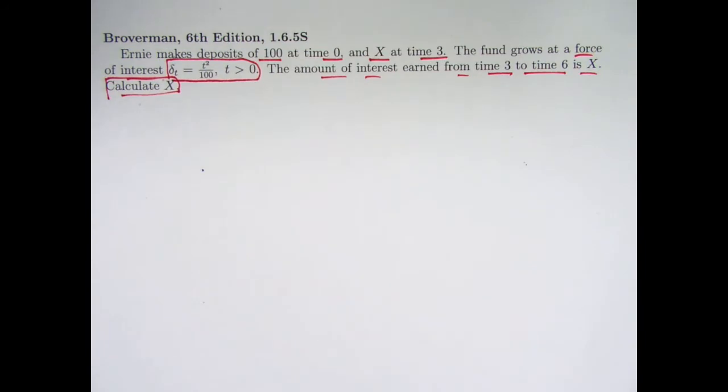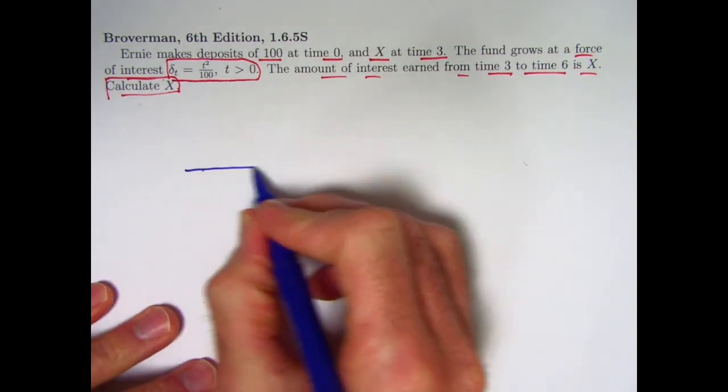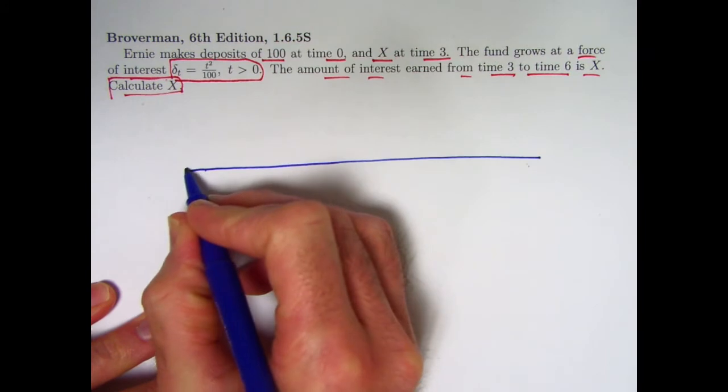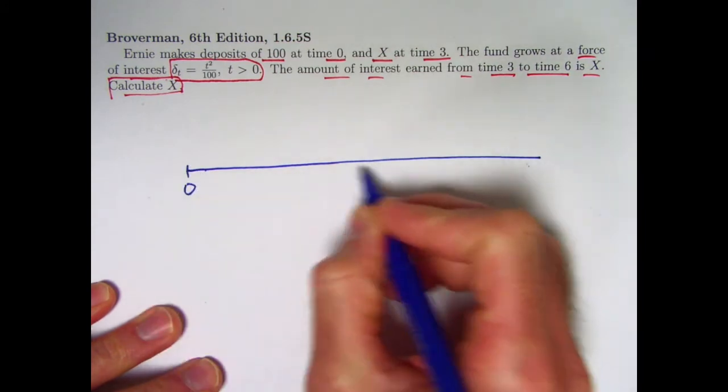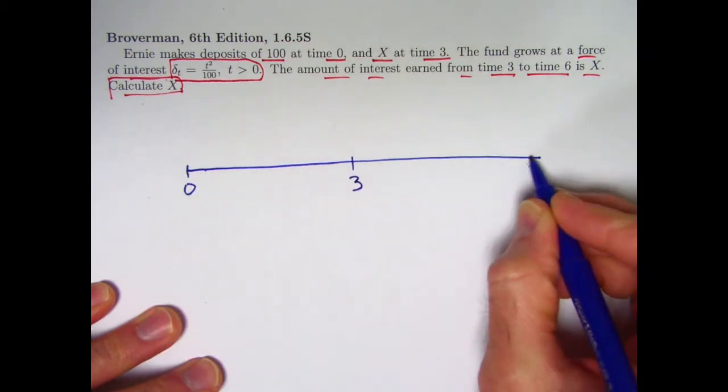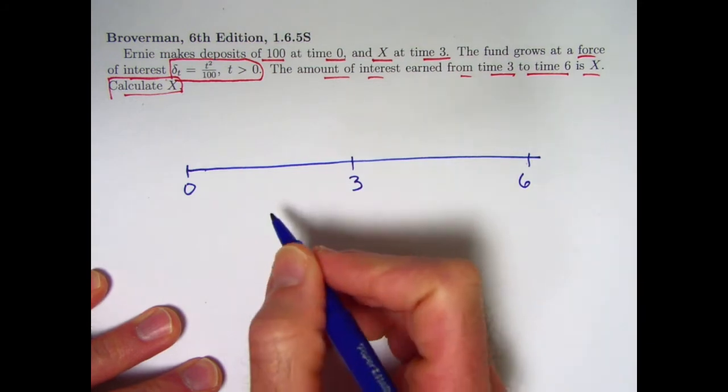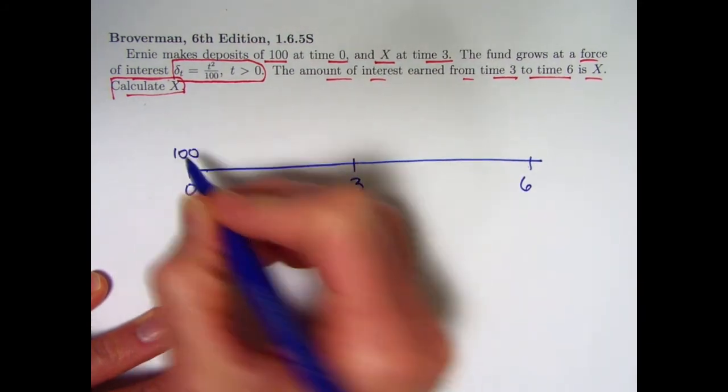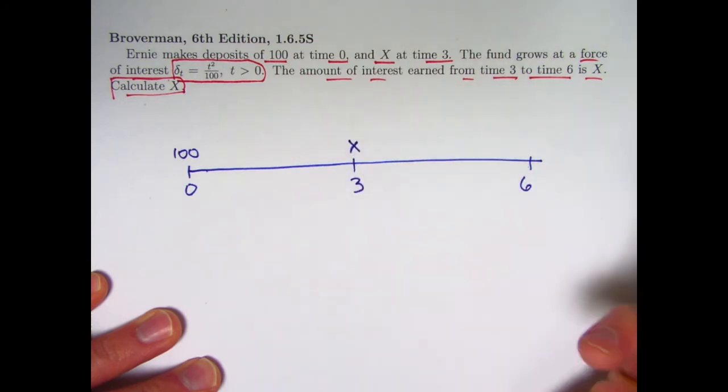We haven't made a number line in a while, so let's go ahead and do that. Let's make a number line. Three relevant times, time 0, time 3, and time 6. You've got a deposit of 100 at time 0 and of x at time 3.